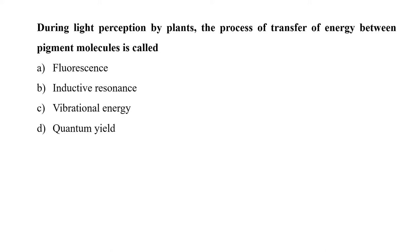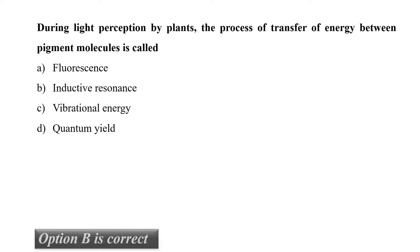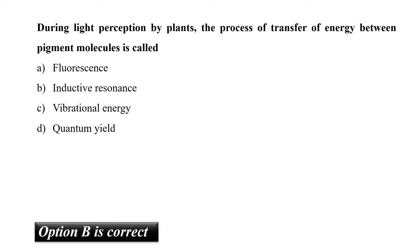The next question is: during light perception by plants, the process of transfer of energy between pigment molecules is called? This process is known as inductive resonance. So our correct option is B. In this process, when light energy is absorbed, electrons get excited from their ground state to their excited state through inductive resonance. When the electrons of chlorophyll A get excited, they get released from the molecule and the photosynthesis process starts.